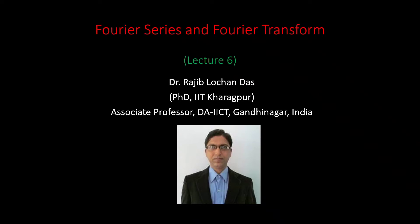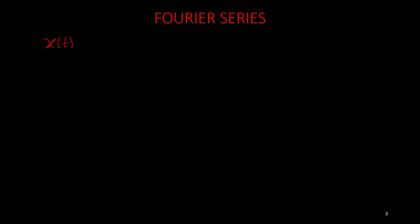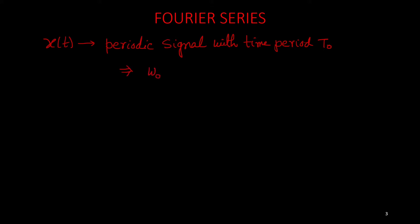Good morning, welcome to my sixth lecture on Fourier series and Fourier transform. In this video, we are going to discuss Parseval's identity for periodic signals. Now let us start with Fourier series. Consider x(t) as a periodic signal with time period T0. So its fundamental angular frequency omega0 is 2π/T0, and this is in radians per second.